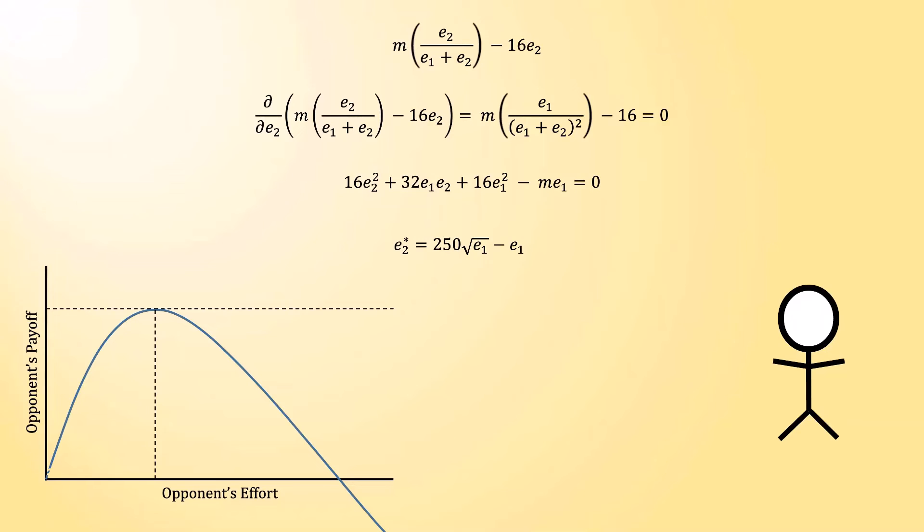All this is saying is that your opponent sees the effort that you have produced, and then will choose their effort based on that, according to the function that you see there. One slight caveat here is that if you were to produce tons and tons of effort, this value would actually be negative. And under that circumstance, your opponent would just choose zero effort instead.